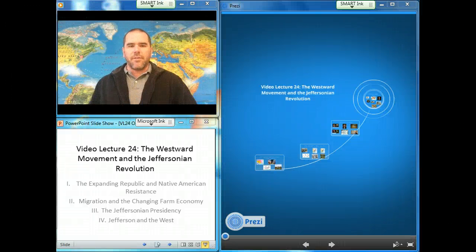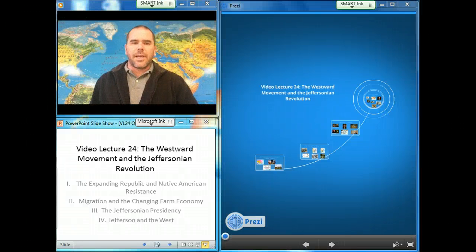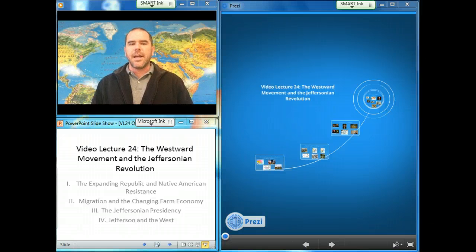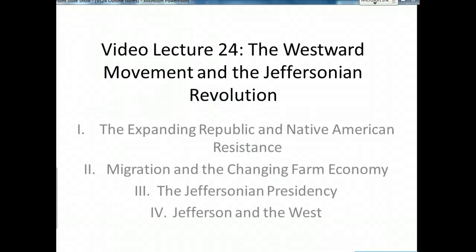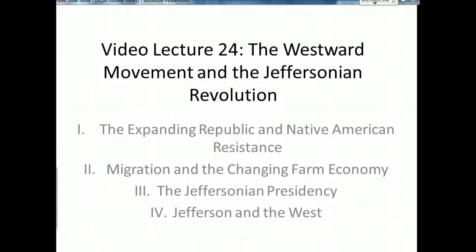This is video lecture 24. We are looking at the westward movement and the Jeffersonian Revolution. We have four parts today: first, the expanding republic and the Native American resistance; second, migration and the changing farm economy; three, the Jeffersonian presidency; and finally, Jefferson and the West.